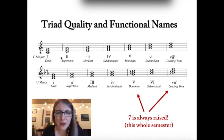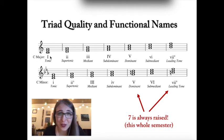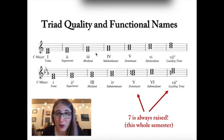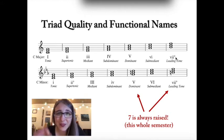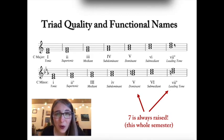You might also notice that they're different qualities — sometimes uppercase and sometimes lowercase. This designates the quality of the chords. Major chords use uppercase Roman numerals; minor chords use lowercase. There's also one diminished chord, marked with a little circle and a lowercase Roman numeral. In the major key, chords 1, 4, and 5 are major triads. The rest are minor, except the leading tone chord, which is diminished.